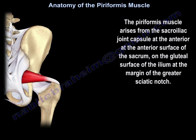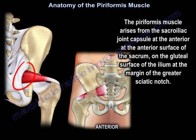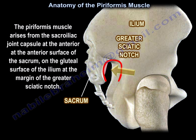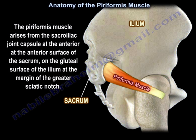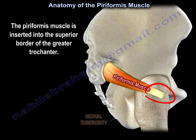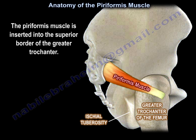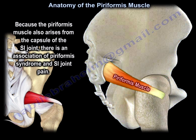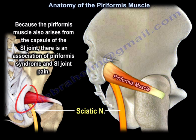The Piriformis Muscle arises from the sacroiliac joint capsule at the anterior surface of the sacrum and the gluteal surface of the ilium at the margin of the greater sciatic notch. The Piriformis Muscle is inserted into the superior border of the greater trochanter. Because the Piriformis Muscle also arises from the capsule of the SI joint, there is an association of Piriformis Syndrome and sacroiliac joint pain.